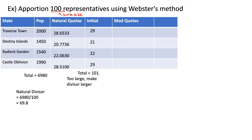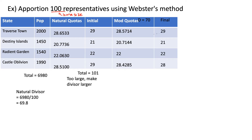Because our initial allocation was too big, we modify our divisor by making it larger than 69.8 — maybe try 70, 69.9, or 71. Here we try a divisor of 70: we take each state population and divide it by 70 to get modified quotas. Rounding these normally: 28.5 rounds to 29, 20.7 rounds to 21, 22 exactly rounds to 22, 28.4 rounds down to 28, and all of this adds up to 100, which is the correct house size. So we're done.